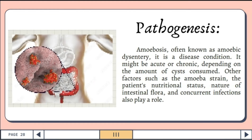Pathogenesis: Amoebiasis, often known as amoebic dysentery, is a disease condition. It might be acute or chronic depending on the amount of cysts consumed. Other factors such as amoeba strain, the patient's nutritional status, nature of intestinal flora, and concurrent infections also play a role.